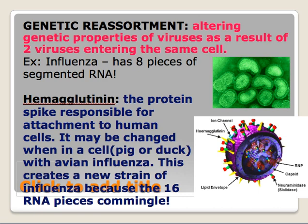Hemagglutinin is one of the glycoproteins responsible for attachment to human cells. It might be changed when it's in a cell of a different species — for example, in a pig or in a duck. With avian influenza, this can create an entirely new strain of influenza because the 16 RNA pieces commingle between the human flu and the avian flu. Neuraminidase is another glycoprotein involved, but hemagglutinin is the one that's incredibly variable.